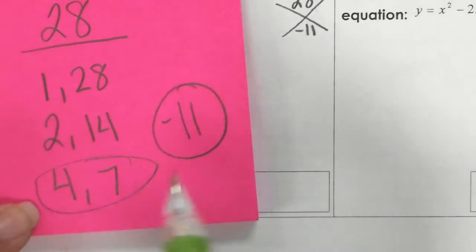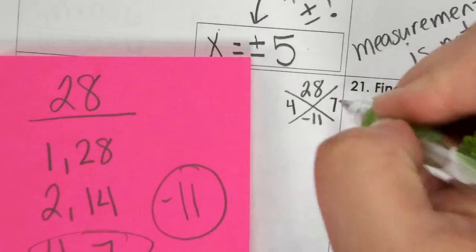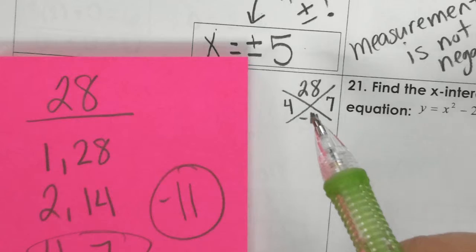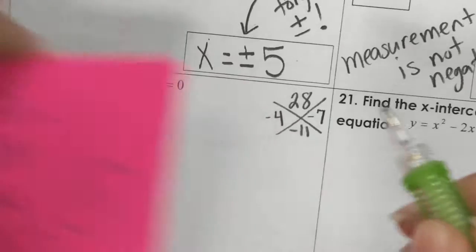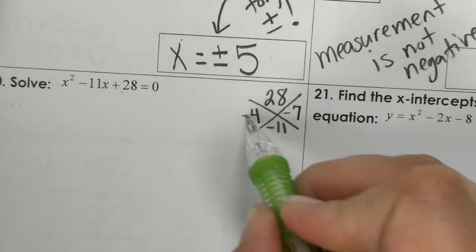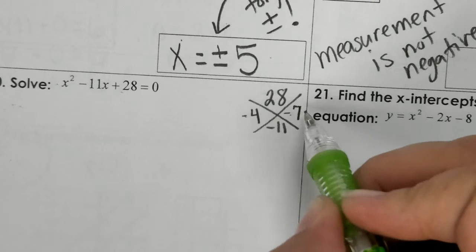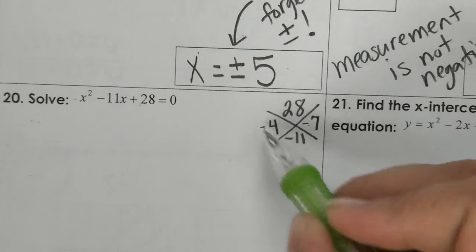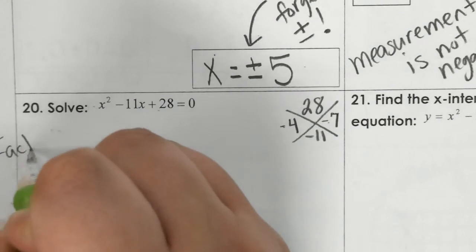If I use 4 and 7, I would have to make them both negative. Because a negative times a negative gets back to positive, and a negative plus a negative gets to negative 11. So now that I know that this works, this is a factoring problem.